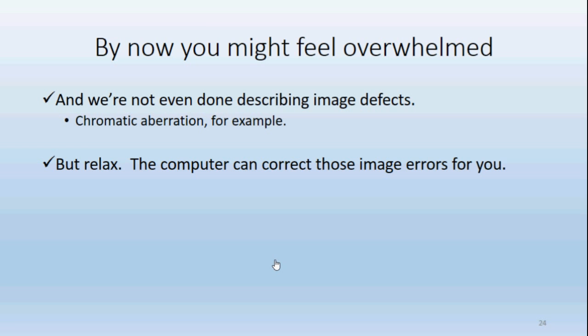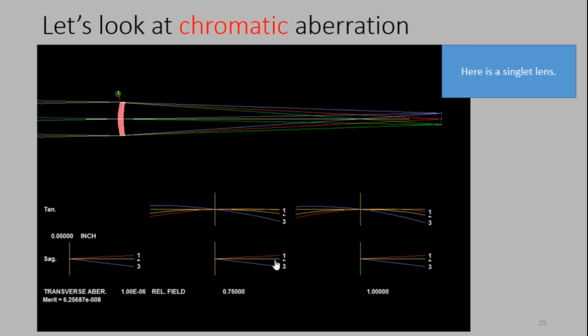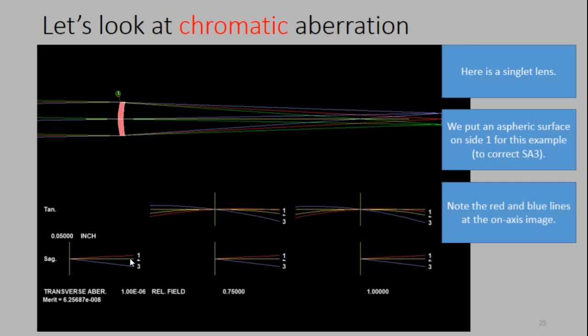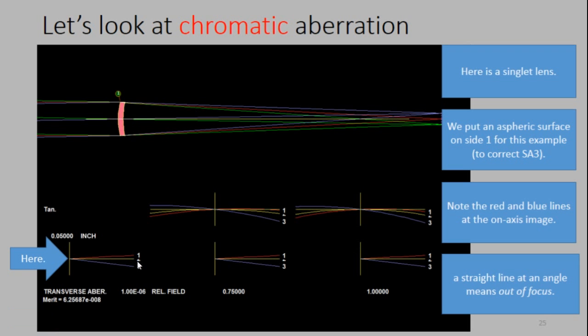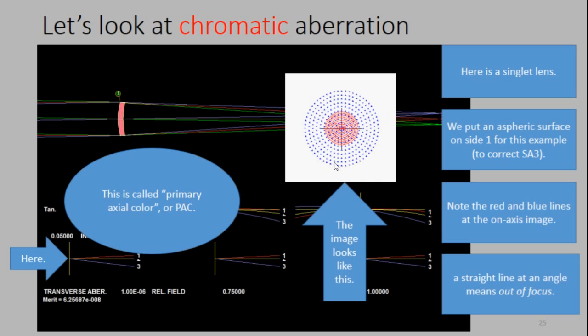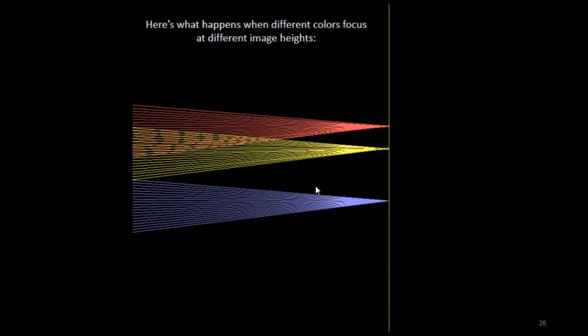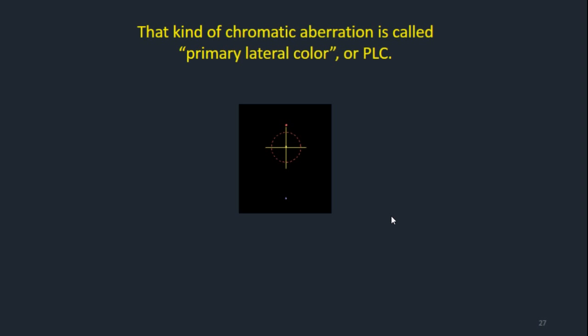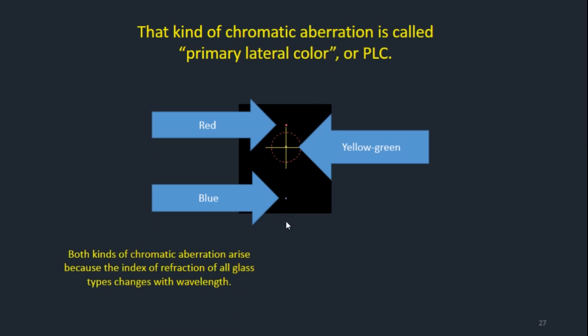Okay, you might feel overwhelmed. And we're not even done describing all the image defects, for example, chromatic aberration. But relax, the computer can correct those image errors for you. Let's look at chromatic aberration. Here's the singlet lens. I put an aspheric surface on surface one just to make the spherical aberration go to zero to illustrate this point here. And notice the red and blue lines and the off axis image. The red's out of focus in this direction, the blue's out of focus in that direction, right there. And a straight line means it's out of focus. And the image looks like this. So the red has a blur of this size, the blue's got a blur of that size. And this is called primary axial color, or PAC. Now here's what happens when different colors focus at different distances off axis. This kind of primary is called primary lateral color, PLC, where the red focuses here, the yellow, and the blue is way down there. Red, yellow, green, and blue.